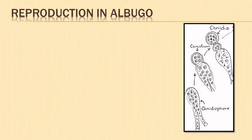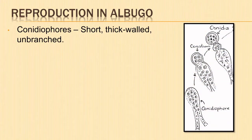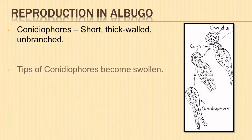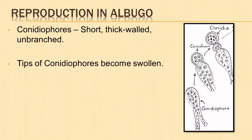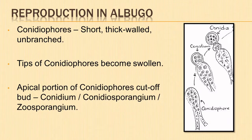The conidiophores are short, run parallel to each other, thick-walled, unbranched, palisade-like cells, and are perpendicular to the surface of the host plant. The tips of the conidiophores become swollen due to the accumulation of excess food. At maturity, the apical portion of the conidiophores cuts off, forming a bud which gets separated from it by a transverse partition. This bud is known as a conidium.